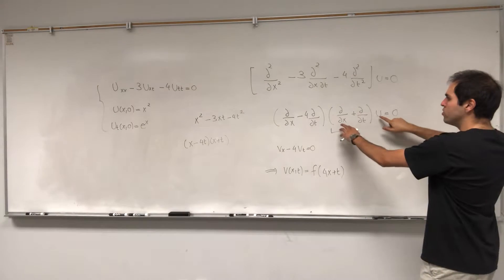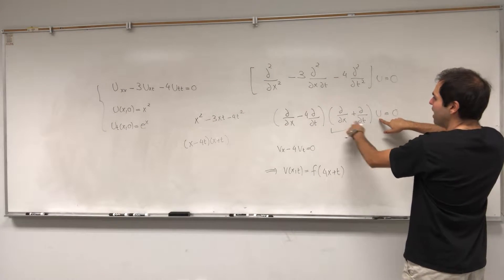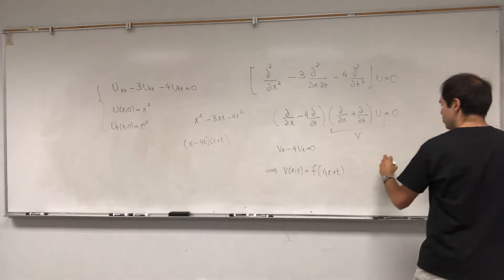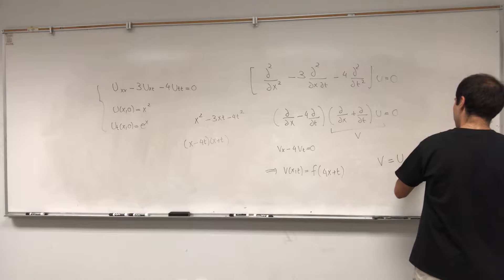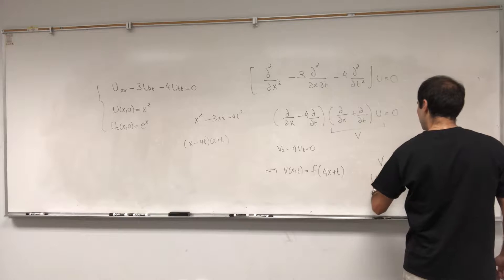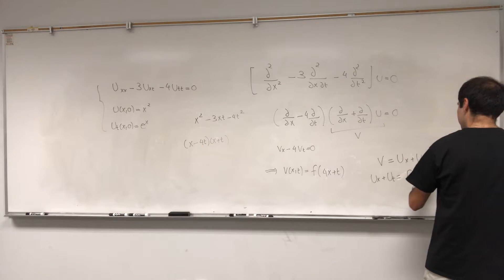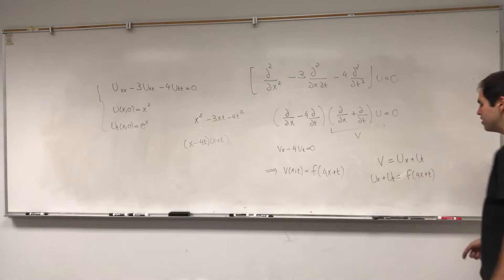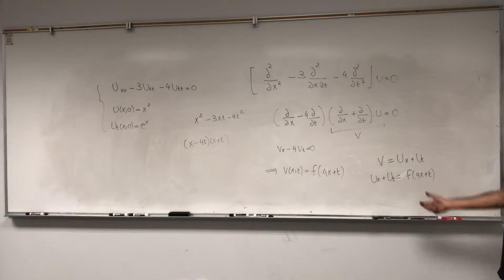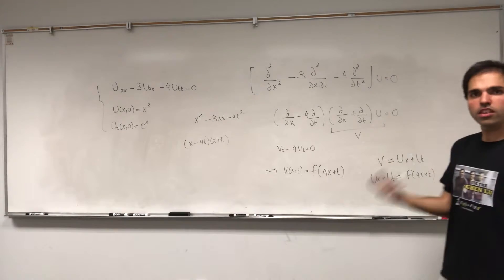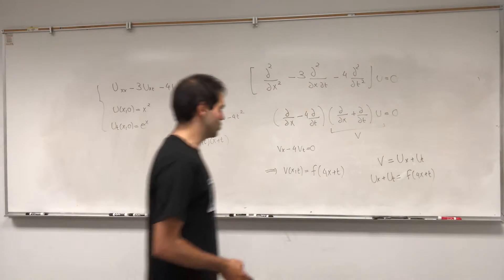And then to solve for u, we solve the equation ux plus ut equals v, where v is f(4x plus t). It's an inhomogeneous equation. The best way to solve it is first to solve the homogeneous version.